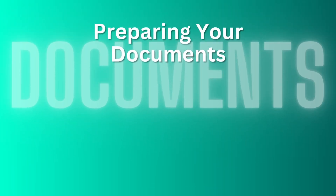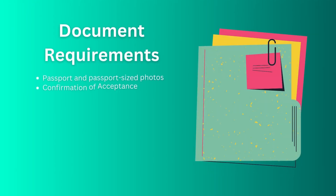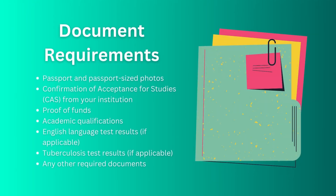Now let's discuss the documents required for a UK student visa. You will need your passport and passport-size photos, confirmation of acceptance for studies from your institution, proof of your funds, academic qualifications, your English language test results if applicable — meaning if you are from a non-English speaking country, you will have to provide an English language test result — your tuberculosis test results if applicable, and any other documents that may be required for certain countries or candidates.